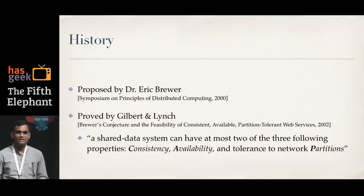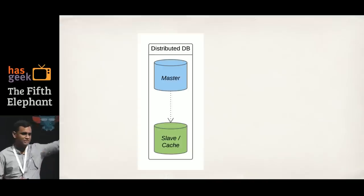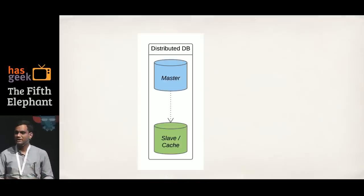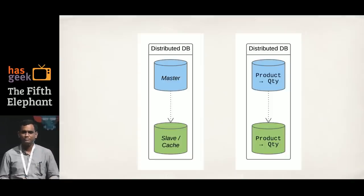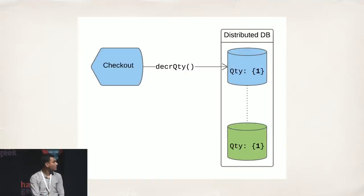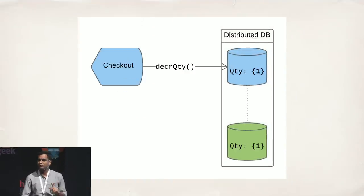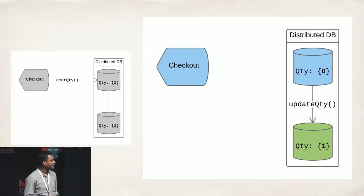There are many kinds of distributed data stores, but I'll take one particular one where there's a master database to which all writes happen and a slave or cache from which most reads happen. I'll use the example of a product database with a mapping from product to quantity. The master is in blue and the slave in green. Say a product has quantity one in the data store.